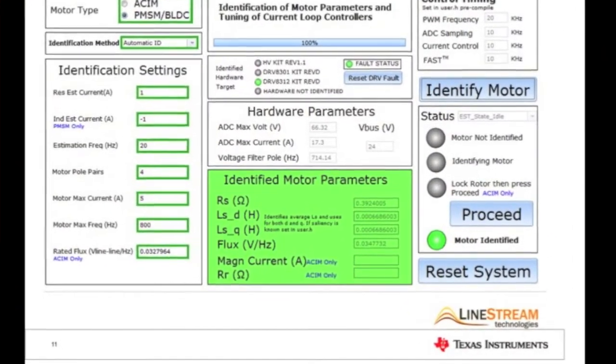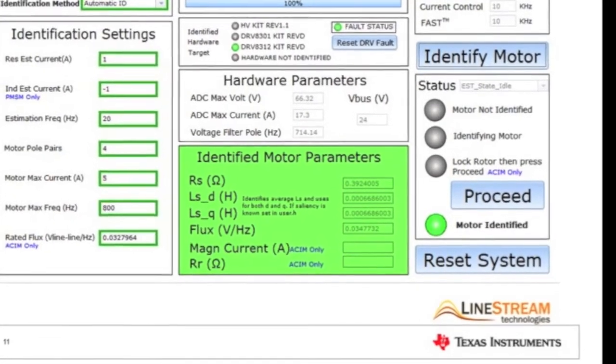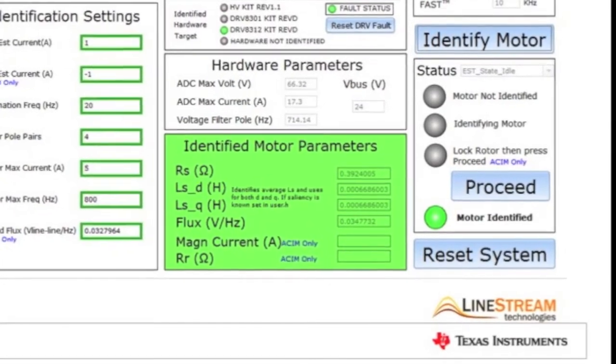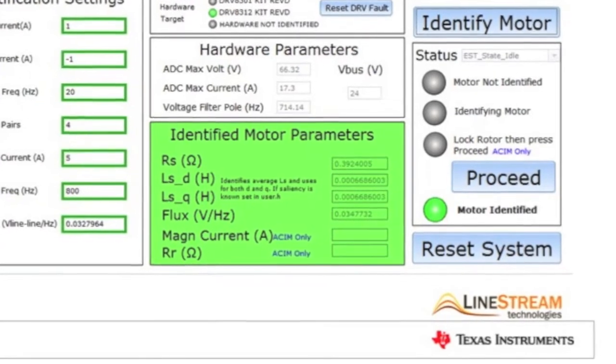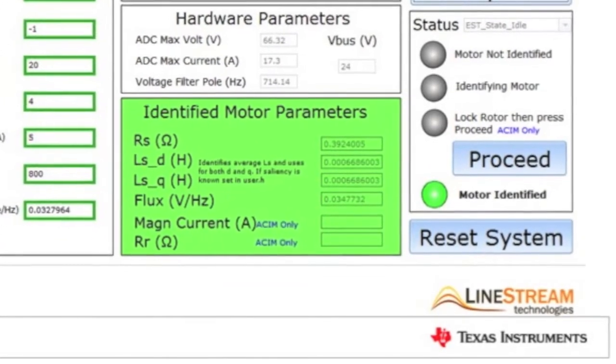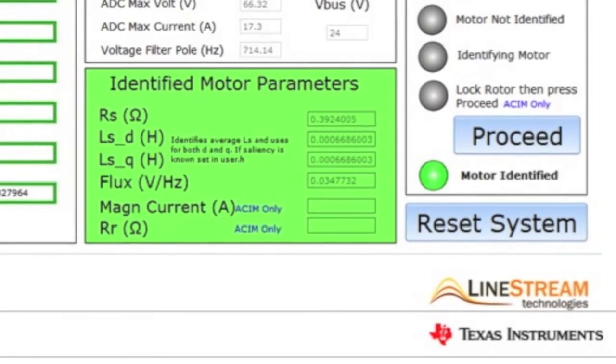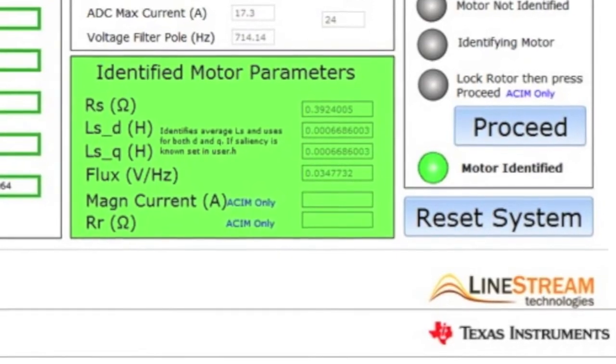InstaSpin measures and keeps track of motor parameters, eliminating the need for a known motor model. Although identifying the motor is not a must for all applications, it provides an easy and better out of the box experience to run any given motor sensorlessly. The result of this process is the identified motor parameters and automatically tuned current loop.